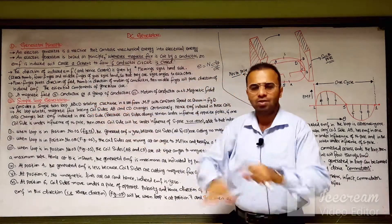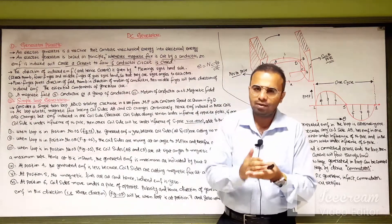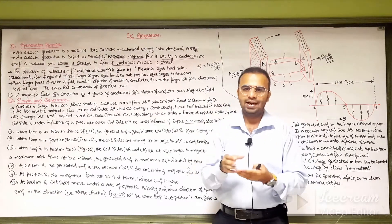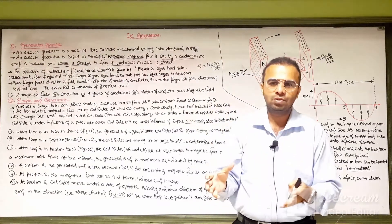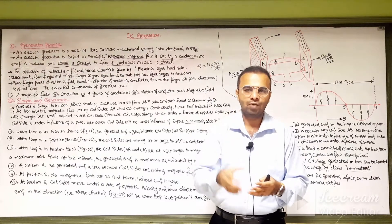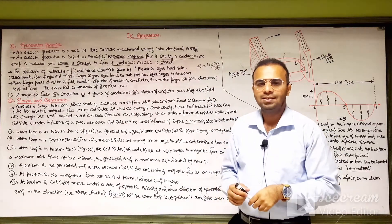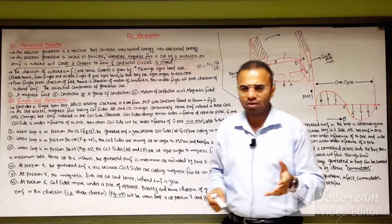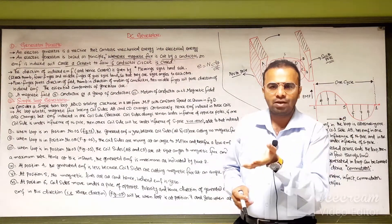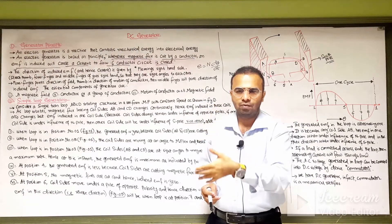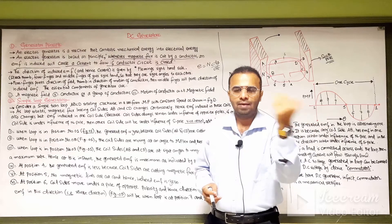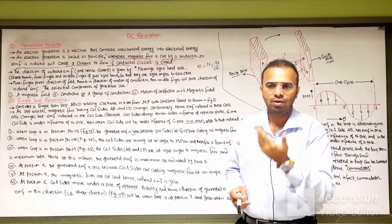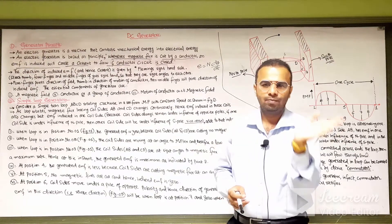The second component is the group of conductors in which EMF is induced. In a DC generator, there are two windings: the field winding mounted on the stator side, in which magnetic flux is produced, and the armature winding on the rotor side, which is the rotating winding where EMF is induced. The third component is the motion of the conductor with respect to the magnetic field, driven by the prime mover.